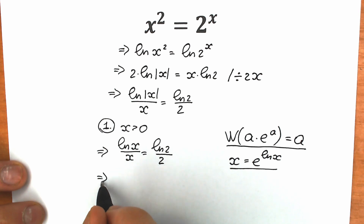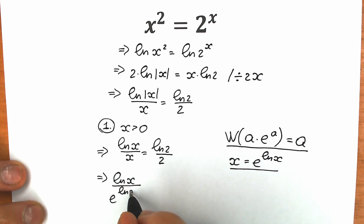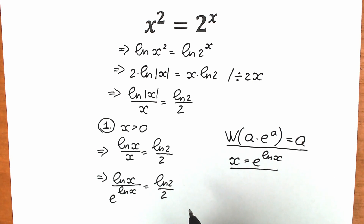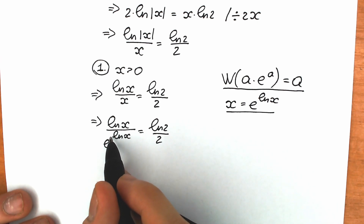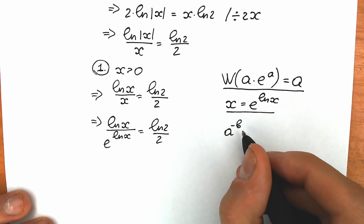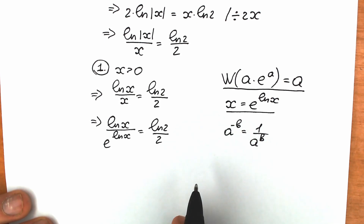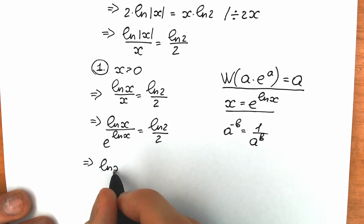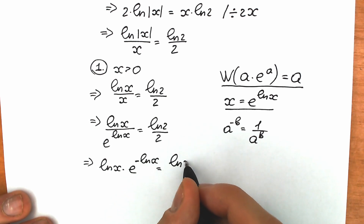So as a result, we have natural log x times e to the power of natural log x equal to natural log 2 over 2. Now let's bring the expression from the denominator to the numerator with a minus sign — recall that a to the power minus b equals 1 over a to the power b. So we have natural log x times e to the power minus natural log x, equal to natural log 2 over 2.